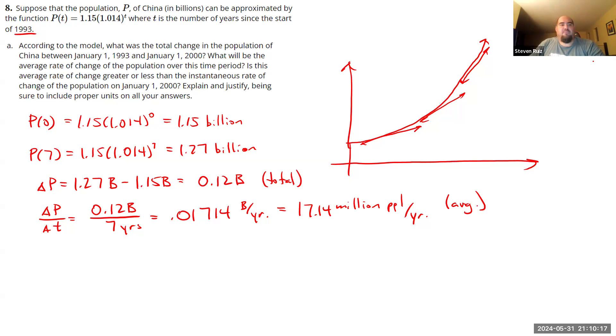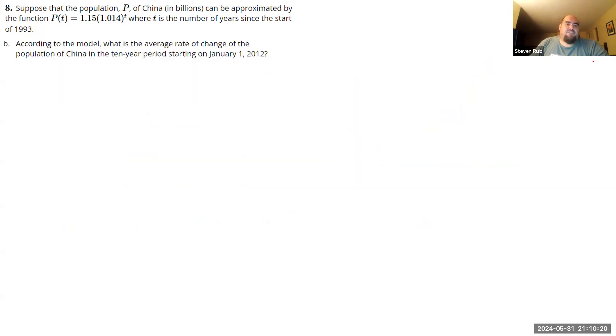So let's go ahead and move on to part B. According to the model, what is the average rate of change of the population in China in the 10-year period starting in 2012? So now we're looking at a different interval. So remember our reference time of 1993. So 2012 minus 1993, that should be 19 years. And we're looking at a 10-year span. So we're looking at the interval from T equals 19 to T equals 29.